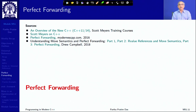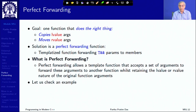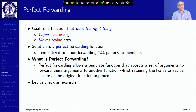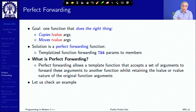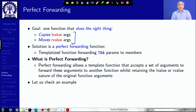The first problem that R value references solve is move semantics, which we have learned about. The next problem is called the perfect forwarding problem. It arises when in a template function I want to call another function and pass the parameters — I have a template function and I want to call another function from it, passing the parameters that the template function received. This is parameter forwarding. What we want is that L value arguments should work as copies and R value arguments should work as moves.